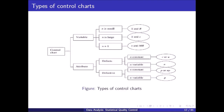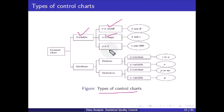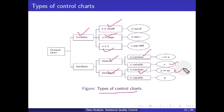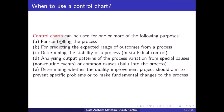For variable data: if n is small, use the x-bar and R chart; if n is large, use the x-bar and S chart; if n equals 1, use the x and MR chart. For attribute data: if monitoring defects with constant n, use the c or u chart; if n is variable, use only the u chart. For monitoring defectives: if n is constant, use the p or np chart; if n is variable, use only the p chart.